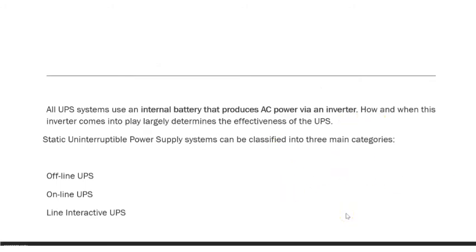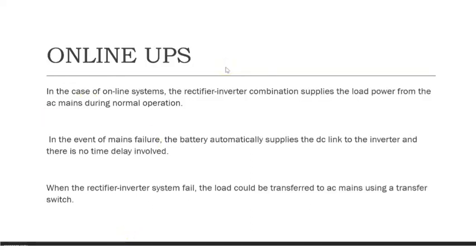Now let us see the classification of static UPS. Static UPS, which uses semiconductor or power electronic devices like IGBTs, is again classified into three categories: online UPS, offline UPS, and line-interactive UPS. In online UPS, even if the power supply is present and providing electric power, the UPS is still functioning. The rectifier-inverter combination is always supplying power to the load.